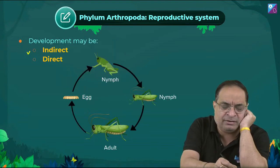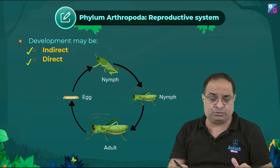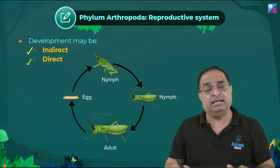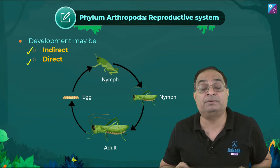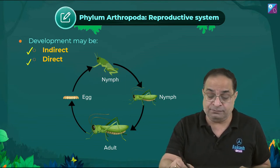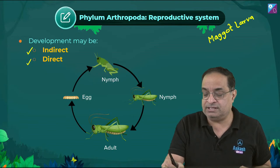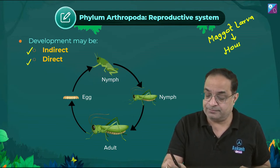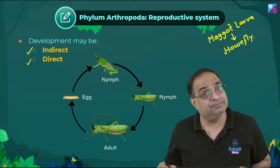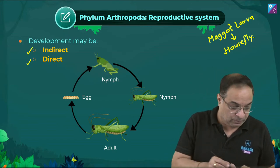Development may have larval stages (indirect) or be direct. Caterpillar larva, maggot (which is the larva of housefly), and grub (which is the larva of beetles) are larval examples in arthropods.